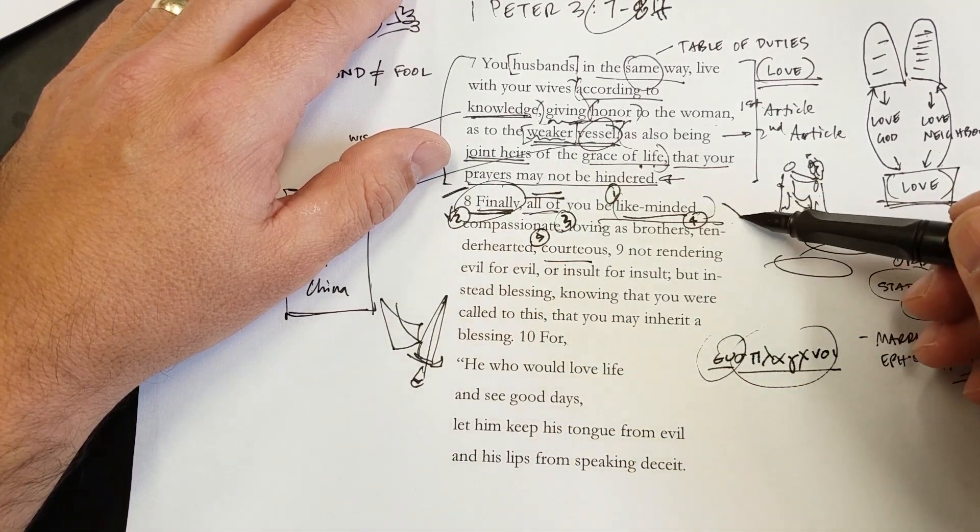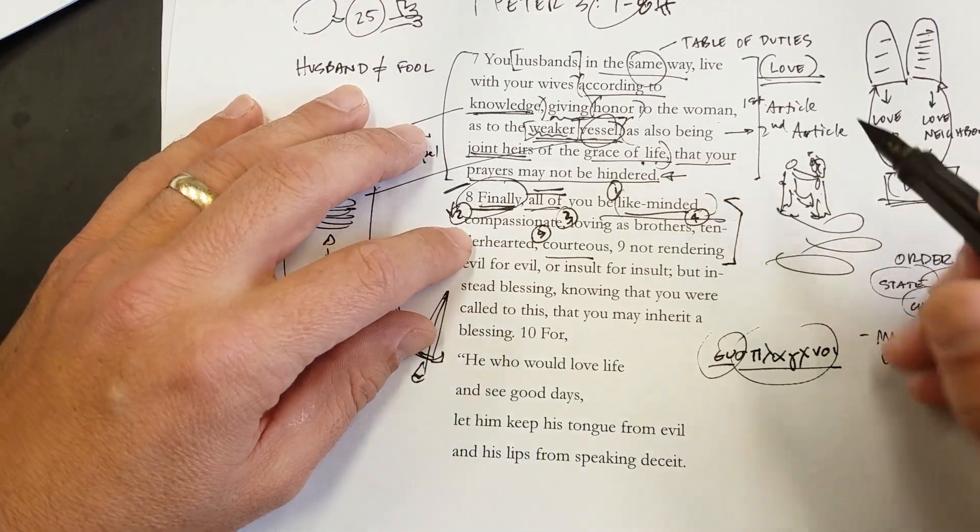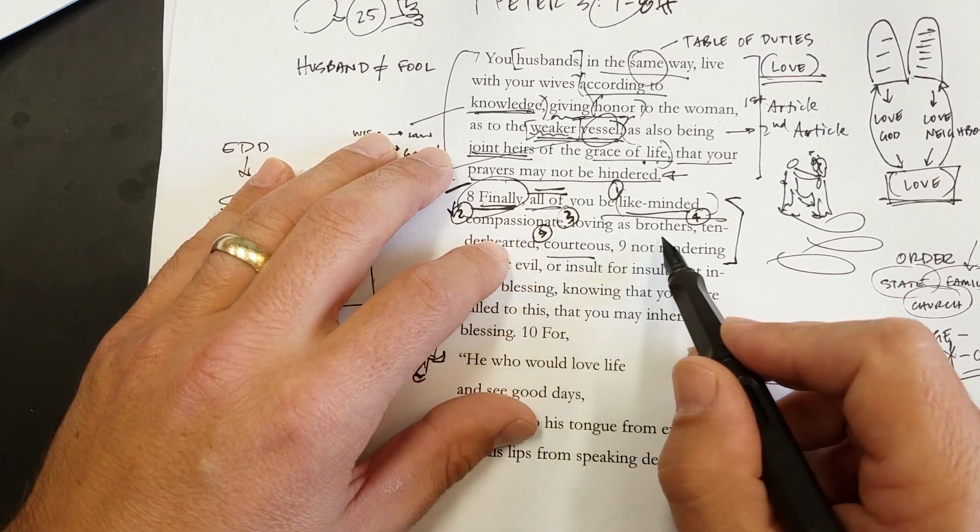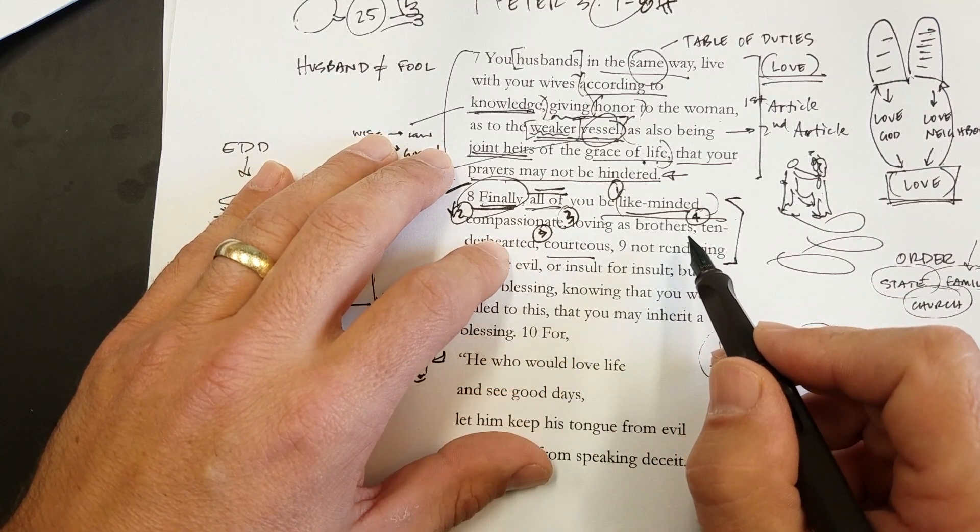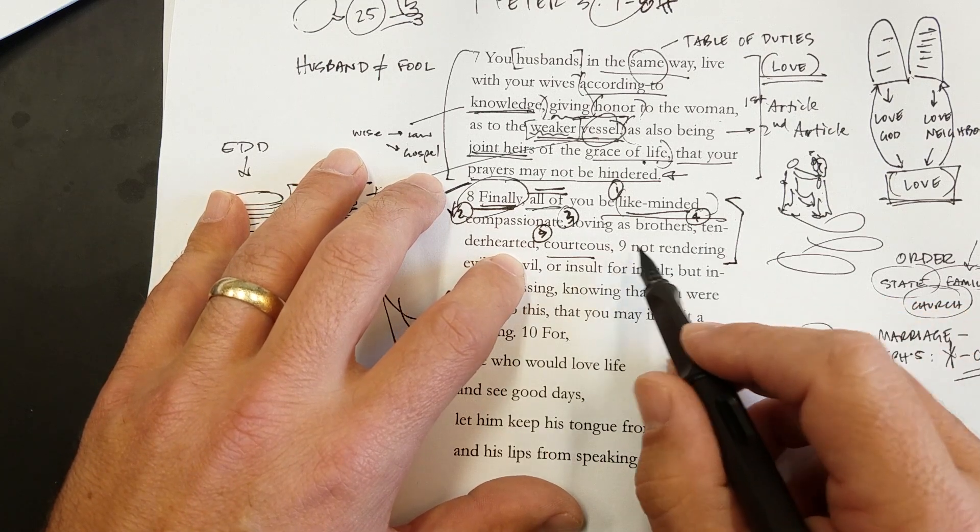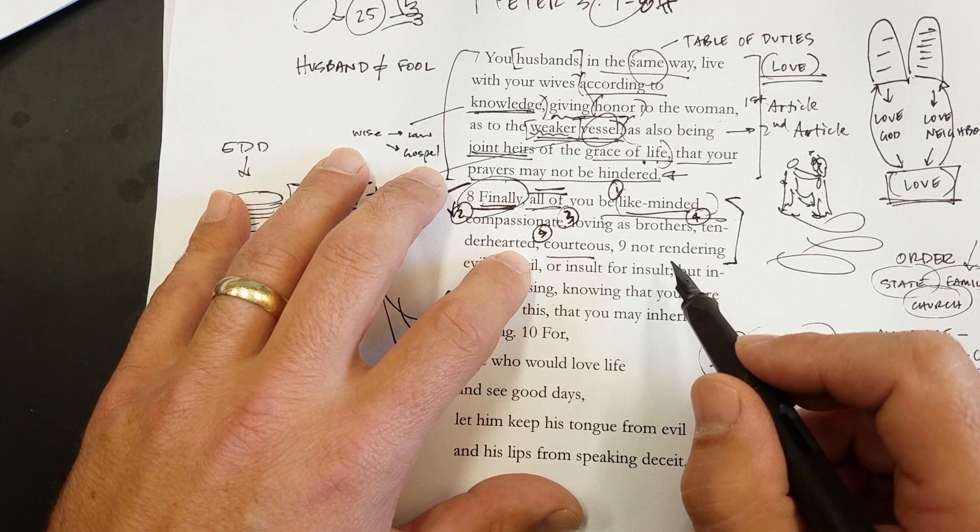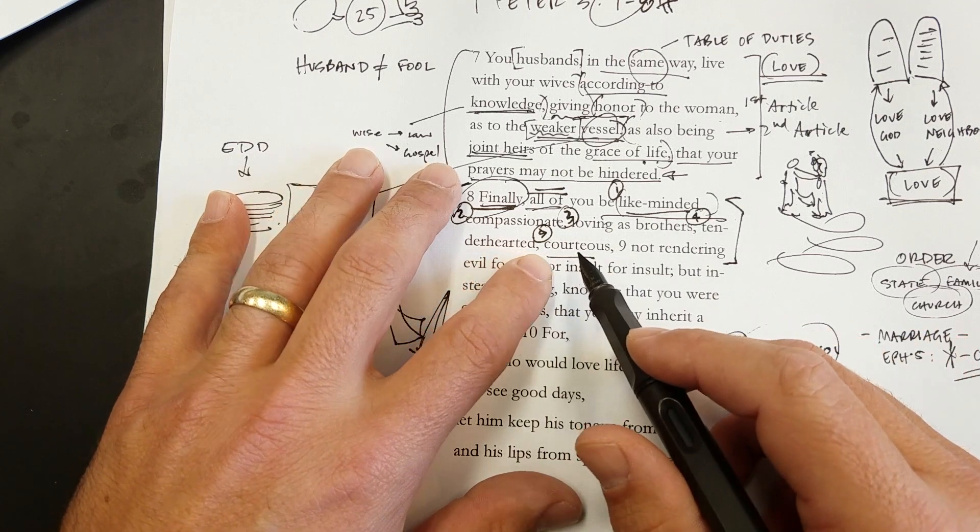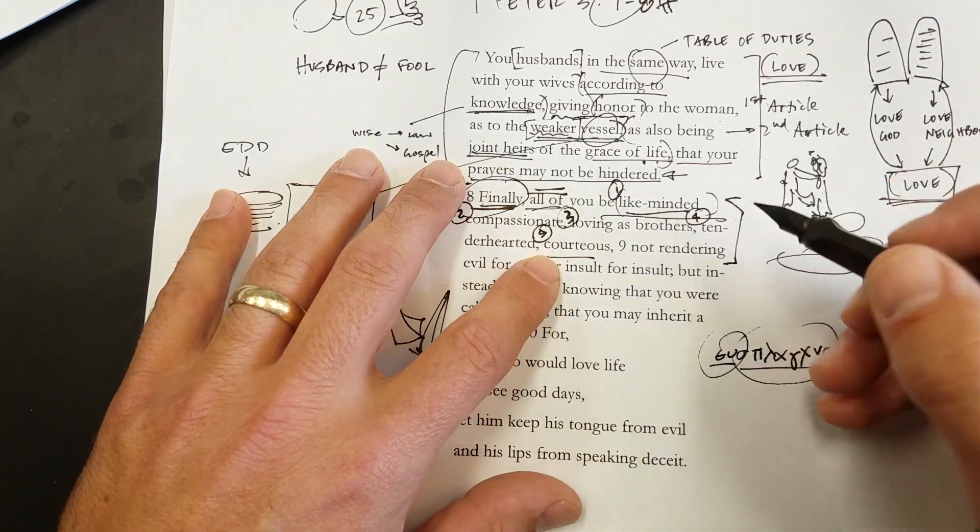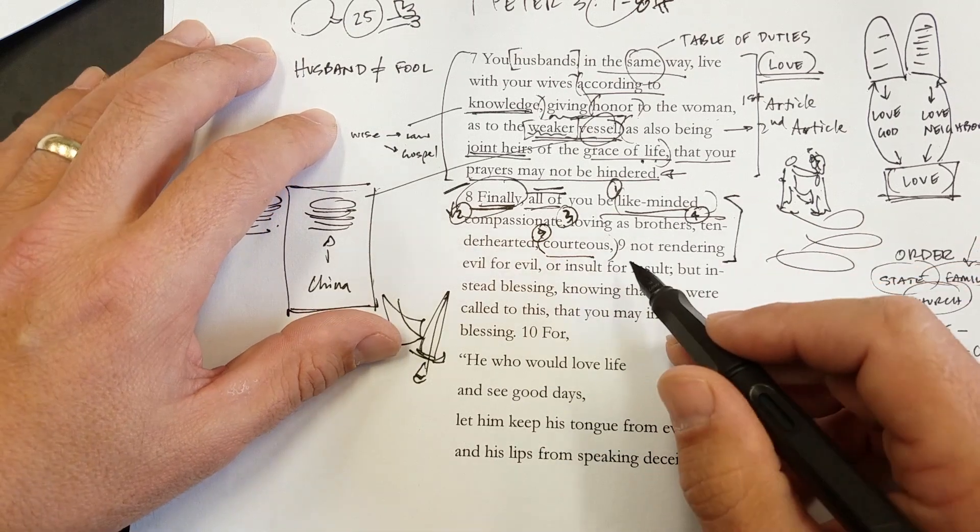So, these five things ought to mark the Christian life. A like-mindedness. This is theological. Compassion. That means we are living to serve one another. Love for the brothers. We have love for all people, and especially for the people of God. We have a good compassioning that we feel for other people, and that we have humility. We're not seeking after our own stuff, but seeking after the stuff that belongs to Jesus.